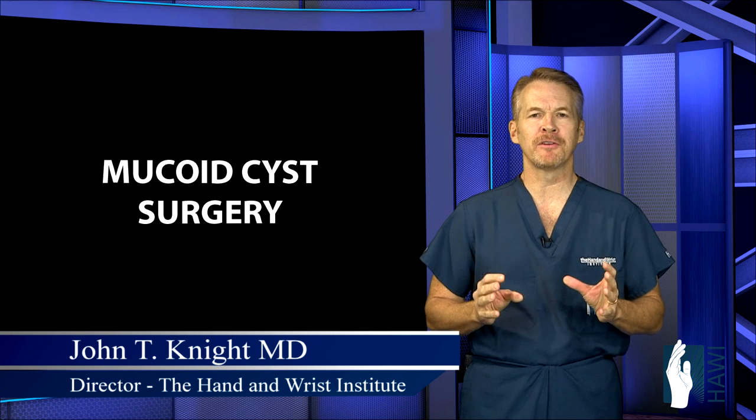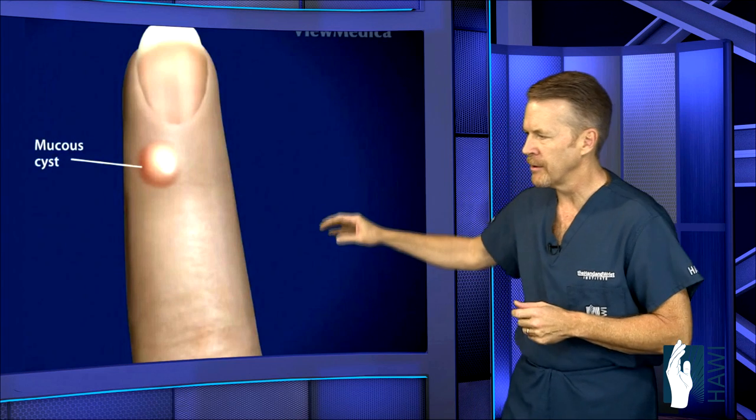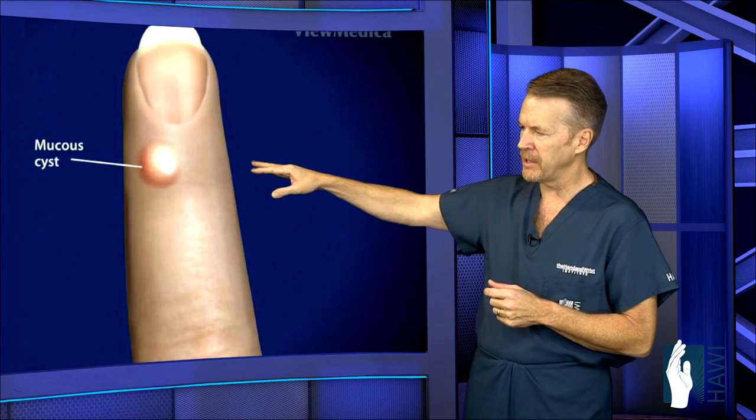Let's take a look at mucoid cyst surgery. A mucoid cyst is a small ganglion cyst that arises from the joint called the distal interphalangeal joint, or DIP joint, which is right out here near the nail bed. Let's take a look.